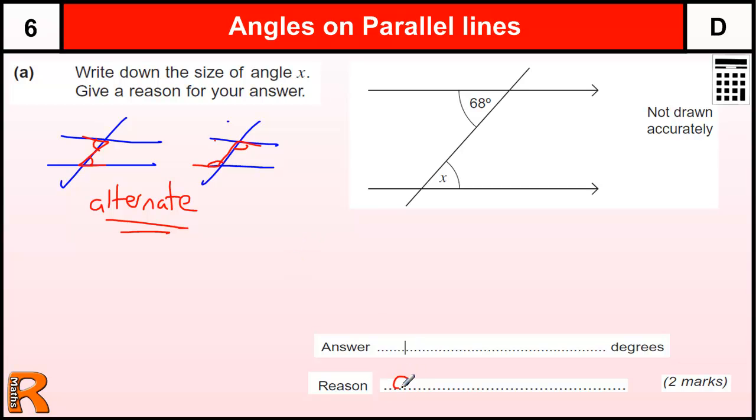So the reason here would be alternate angles, or alternate angles are the same, are equal. And you need to state 68. Most people can get it 68, it looks like it's 68, but you've got to get the alternate angles are equal. It's one mark for that and one mark for that. And you'd be kicking yourself if that one mark was the one that stopped you from getting the next grade up.